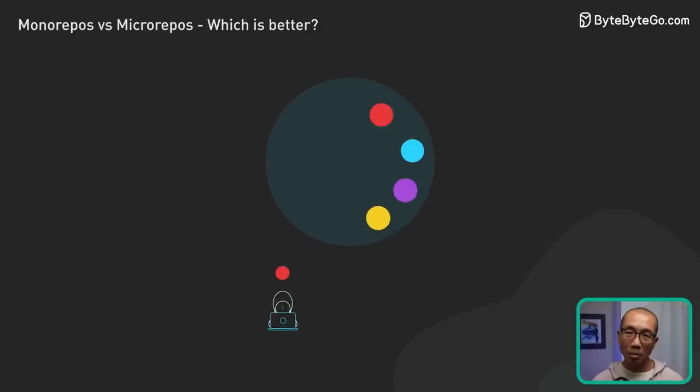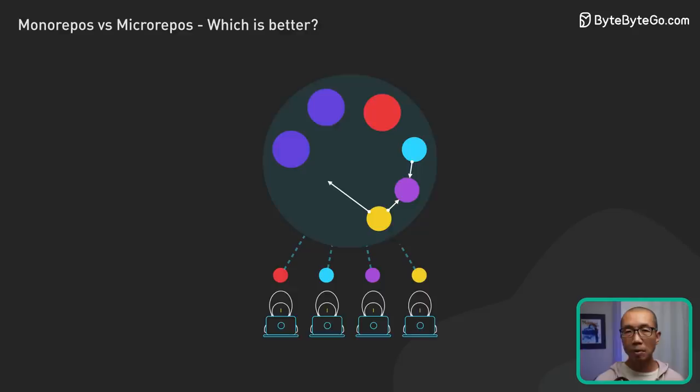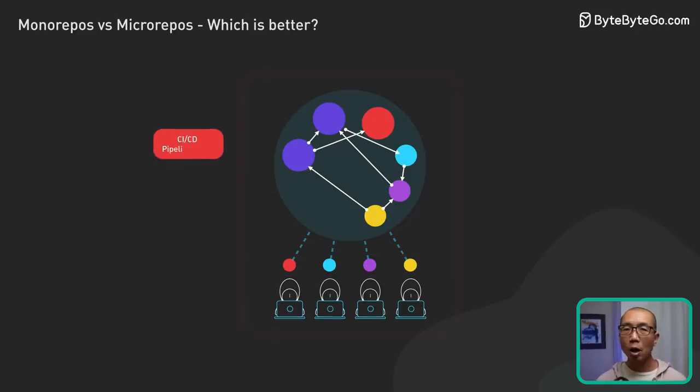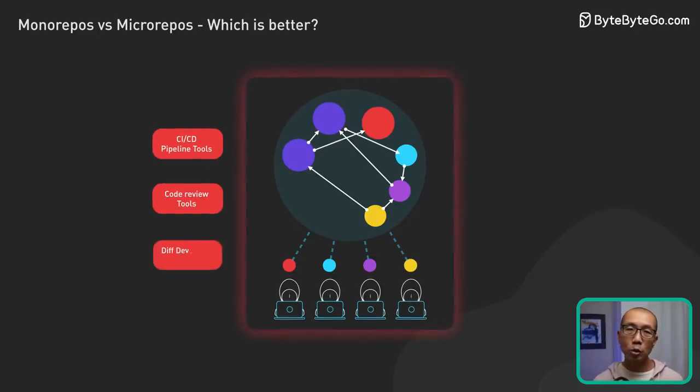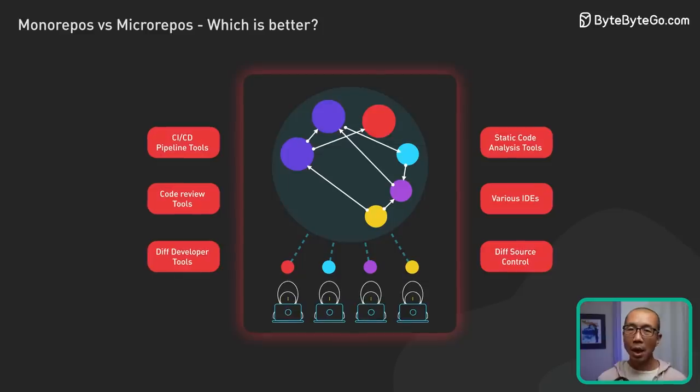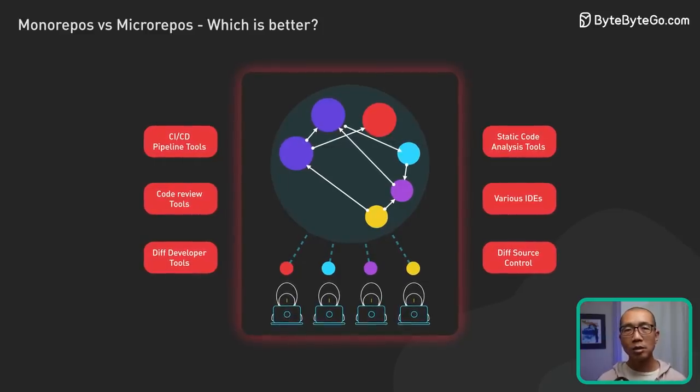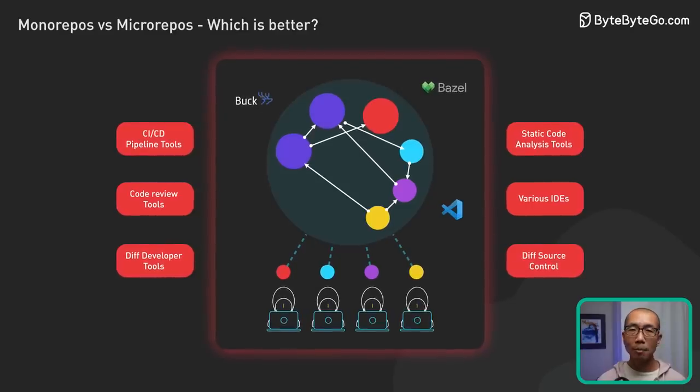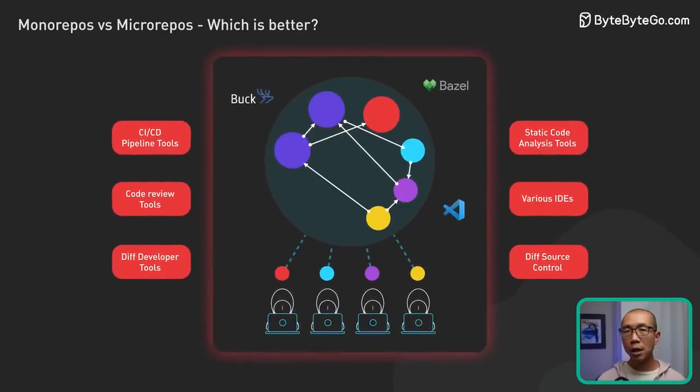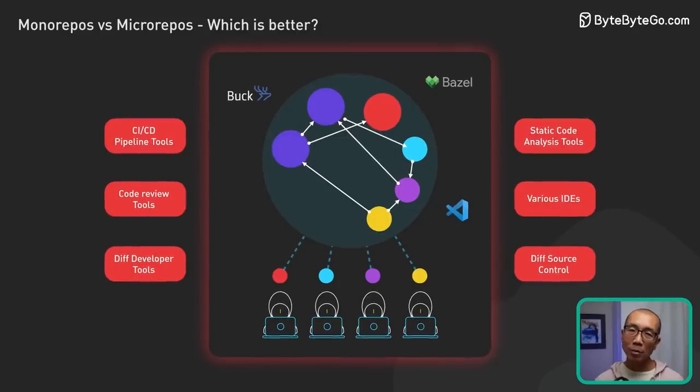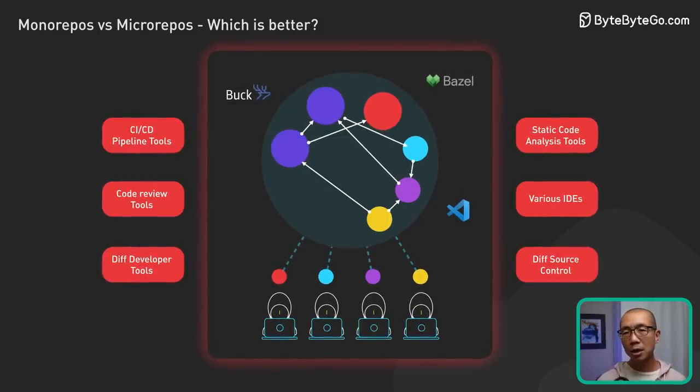Lastly, although each team owns a section of monorepo, customization can be tricky. Teams can't always independently use different tools or libraries due to possible conflicts. And major changes need to consider the entire code base. That said, using tools like Google's Bazel and maintaining good communication can help balance this trade-off, allowing teams to flexibly evolve with shared guidelines.